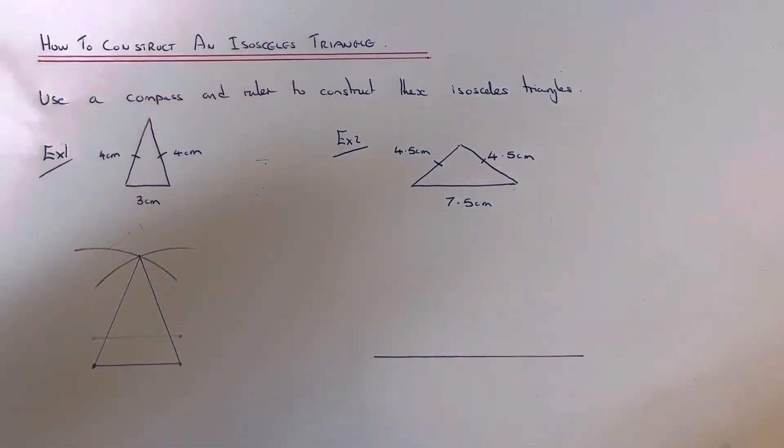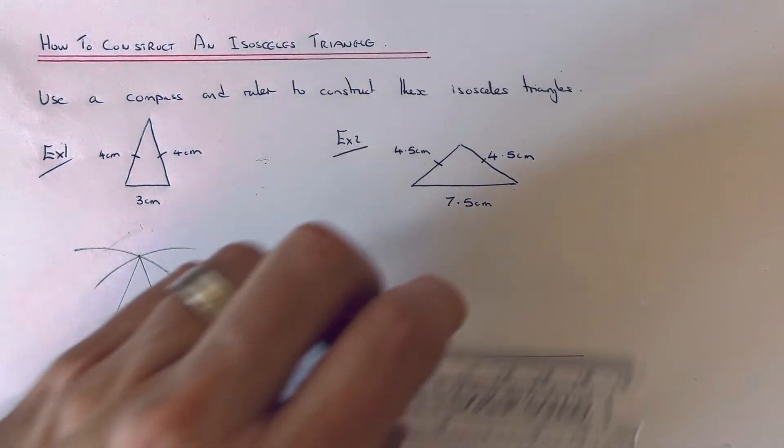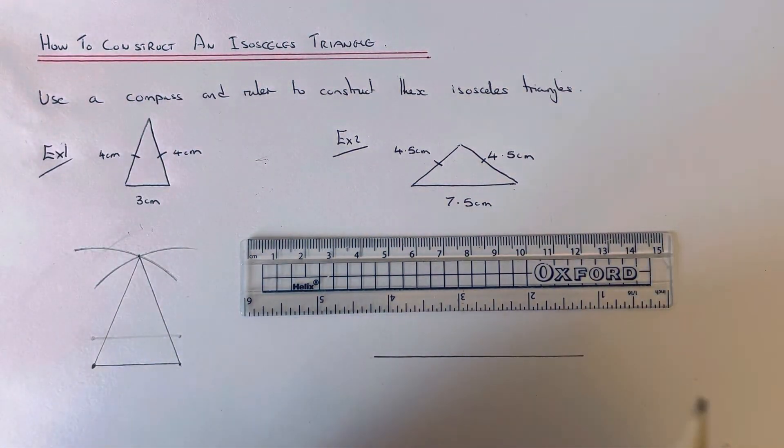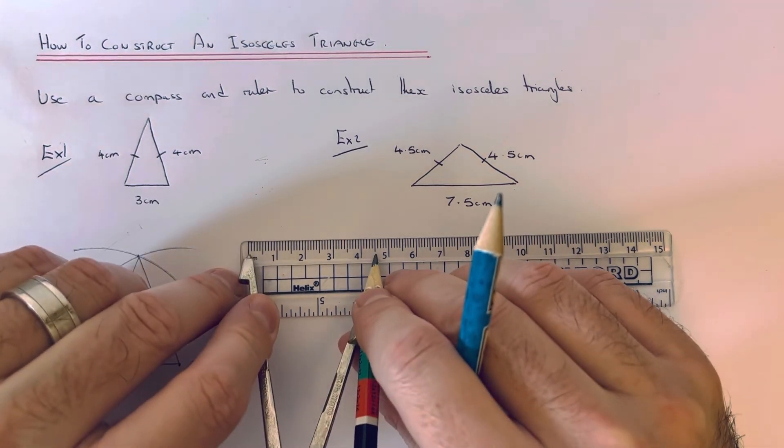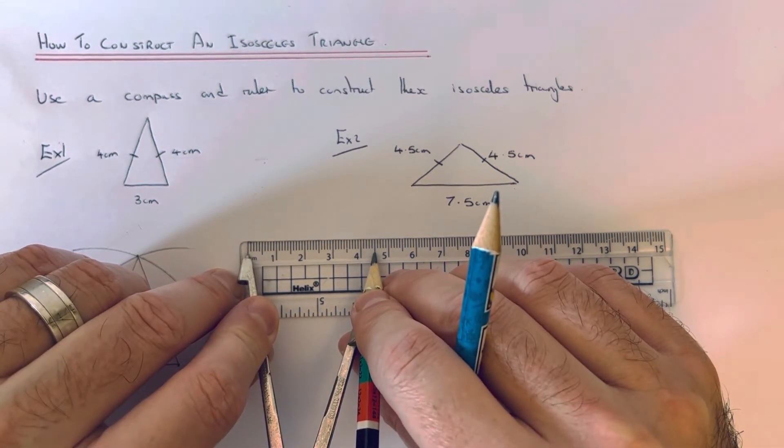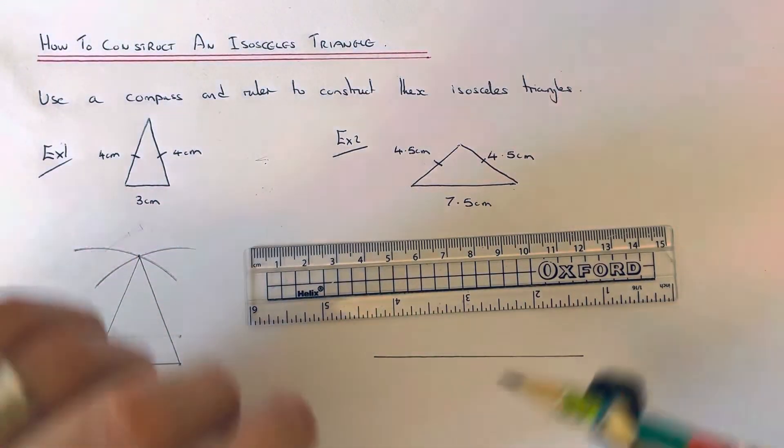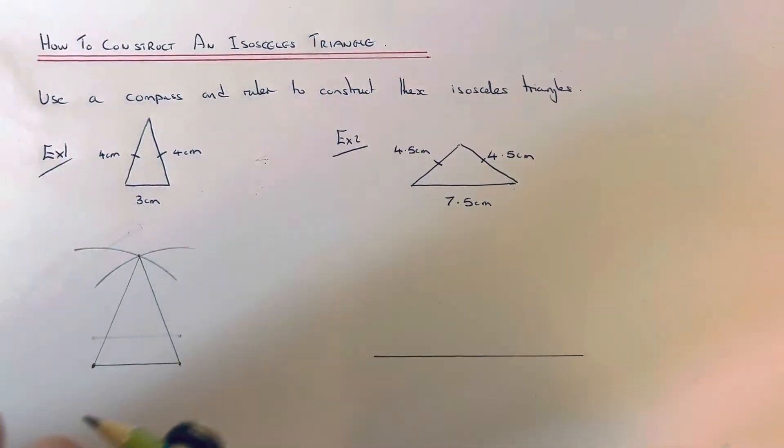Then we need to do the other two sides. Get your ruler and open the compass to 4.5 centimeters this time. That's 4.5. Again, we need to do two arcs.